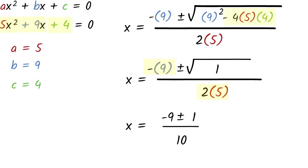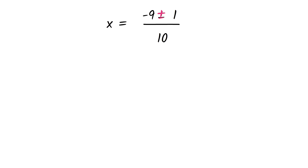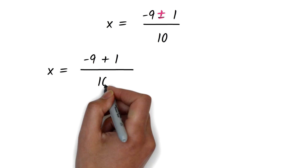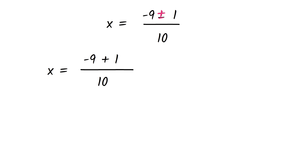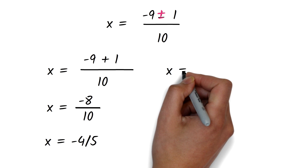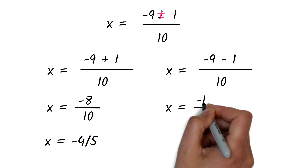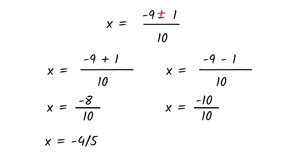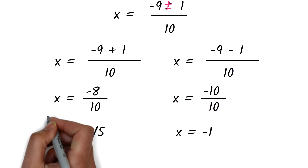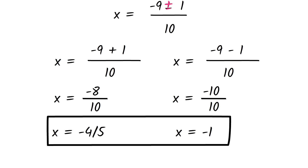So we now have x equals negative 9 plus or minus 1, all over 10. We have plus or minus, so we solve the plus part first. x equals negative 9 plus 1 over 10. Negative 9 plus 1 is negative 8, so this is negative 8 divided by 10. We can reduce this to get x equals negative 4 over 5. Next, we solve the minus part. x equals negative 9 minus 1 over 10. Negative 9 minus 1 is negative 10, so this is negative 10 divided by 10, giving us x equals negative 1. Our answer is x equals negative 4 over 5 or x equals negative 1.